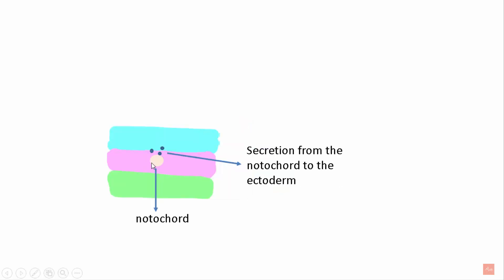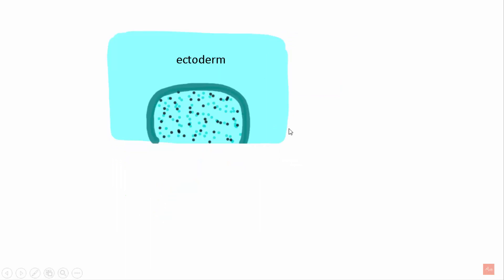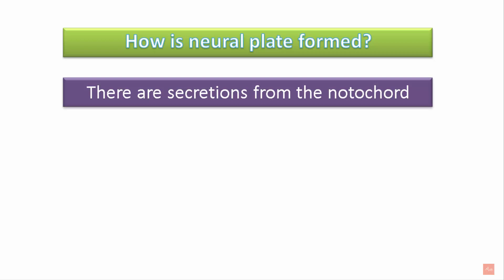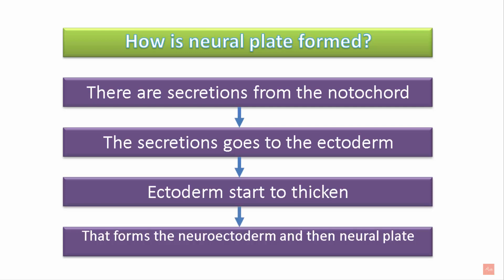Now there is a notochord present in the mesoderm. Secretions from the notochord go into the ectoderm, where they accumulate and form the neuroectoderm. This later thickens and flattens to form the neural plate. To recap: secretions from the notochord go into the ectoderm, the ectoderm starts to thicken, forming the neuroectoderm and the neural plate.